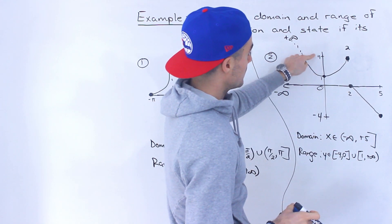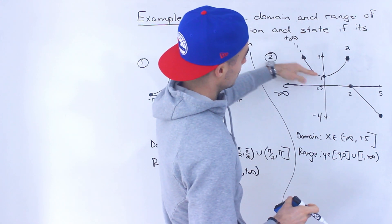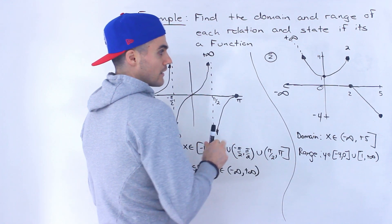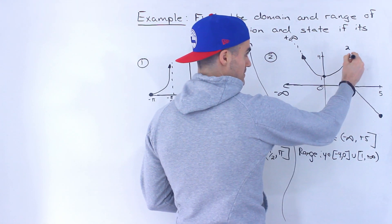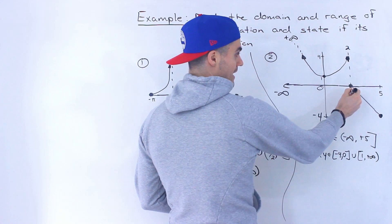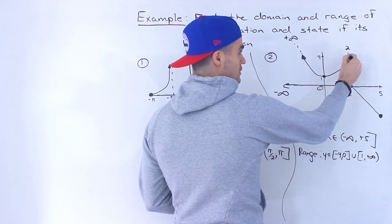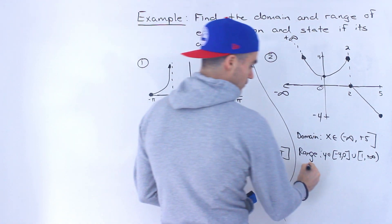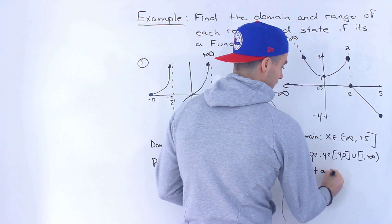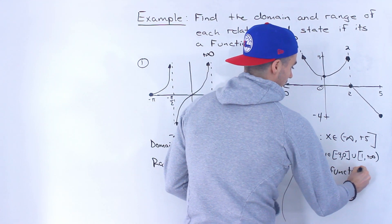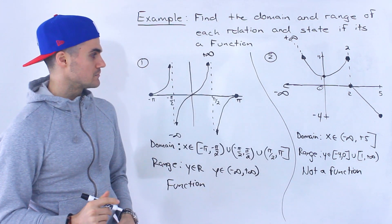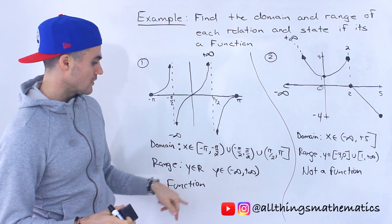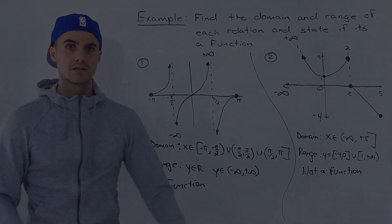So the range is from negative four to zero, union one to positive infinity. Is it a function? It's not a function because it fails the vertical line test — specifically at x equals two, we have two y values: y equals zero and y equals four. You can't have multiple y values for a single x value in a function, so this relation is not a function.